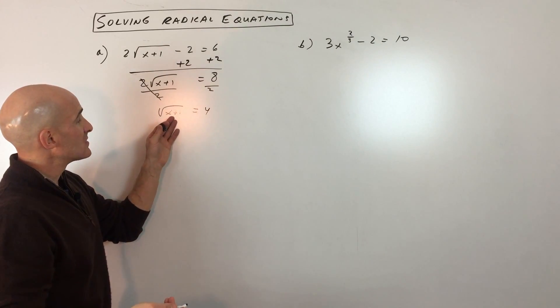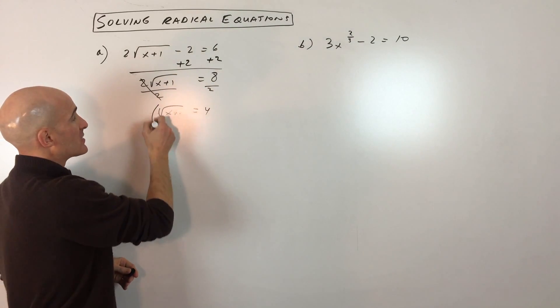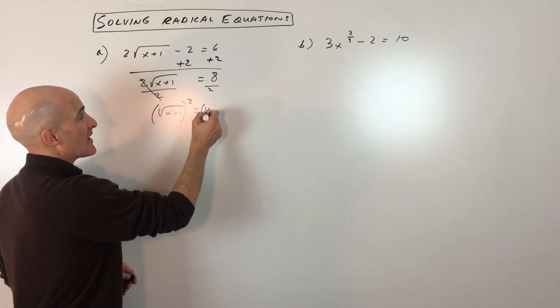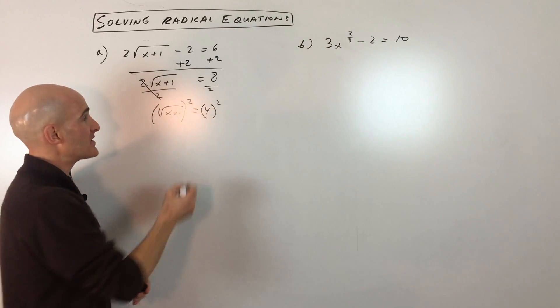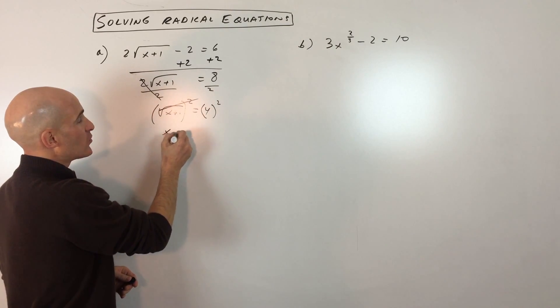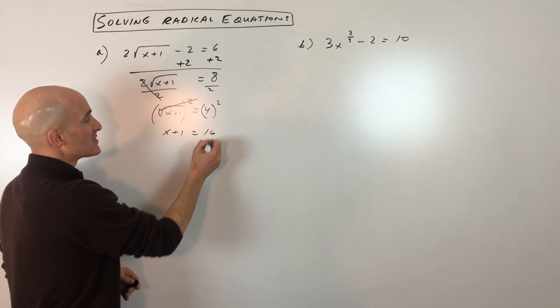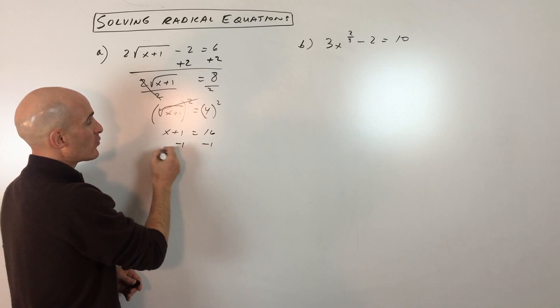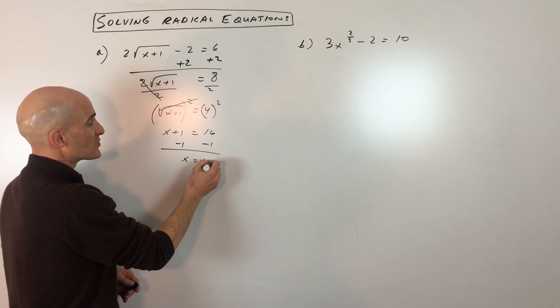Now what we're going to do is get rid of this radical, this square root, by doing the opposite, and that's to square both sides. The square and the square root cancel each other out. We get x plus 1 equals 16. And if we subtract 1 from both sides, we get x equals 15.